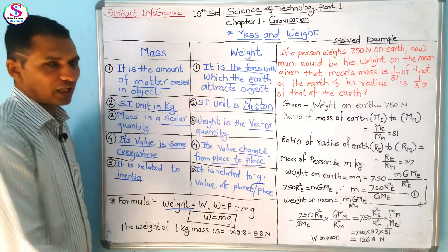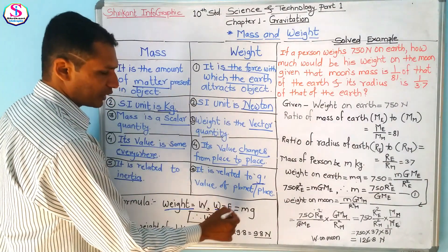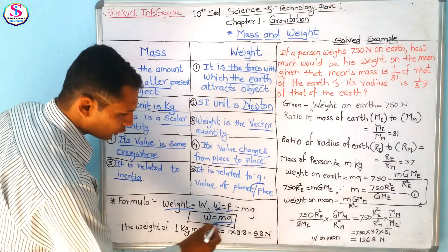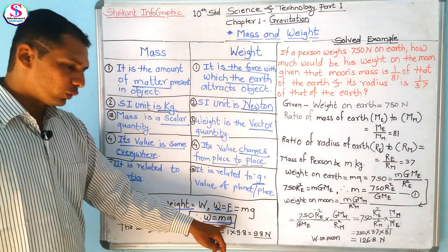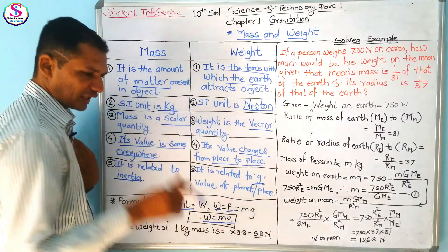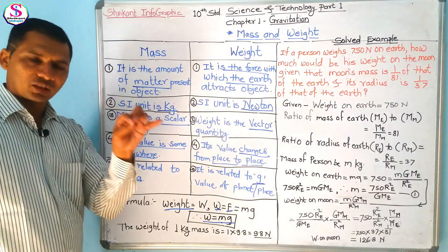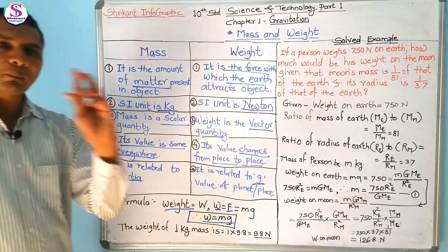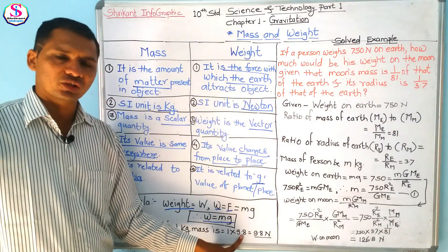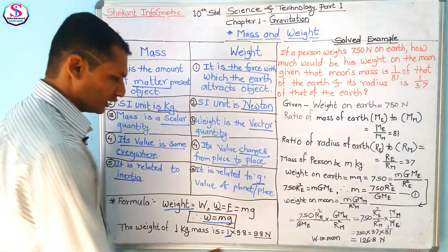From these formulas we can calculate the weight, the mass, or the gravitational acceleration for a particular place. The formula of weight is: W equals m times g, where m is the mass and g is the gravitational acceleration of that planet or place. So the weight of 1 kg mass is 9.8 Newtons.